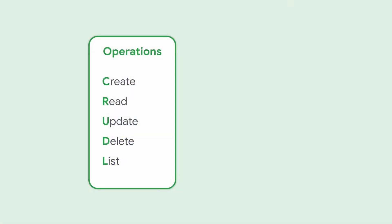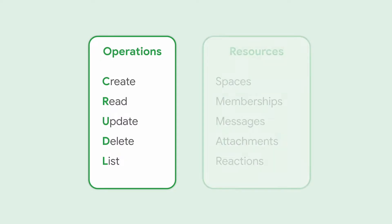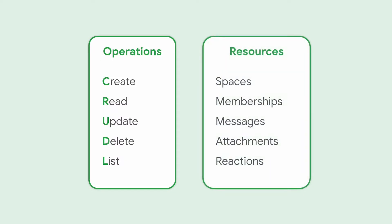The Google Chat API is a RESTful API that gives you the ability to programmatically access Google Chat. With the API, it is possible to perform create, read, update, delete, and list operations on spaces, memberships, messages, attachments, and reactions.